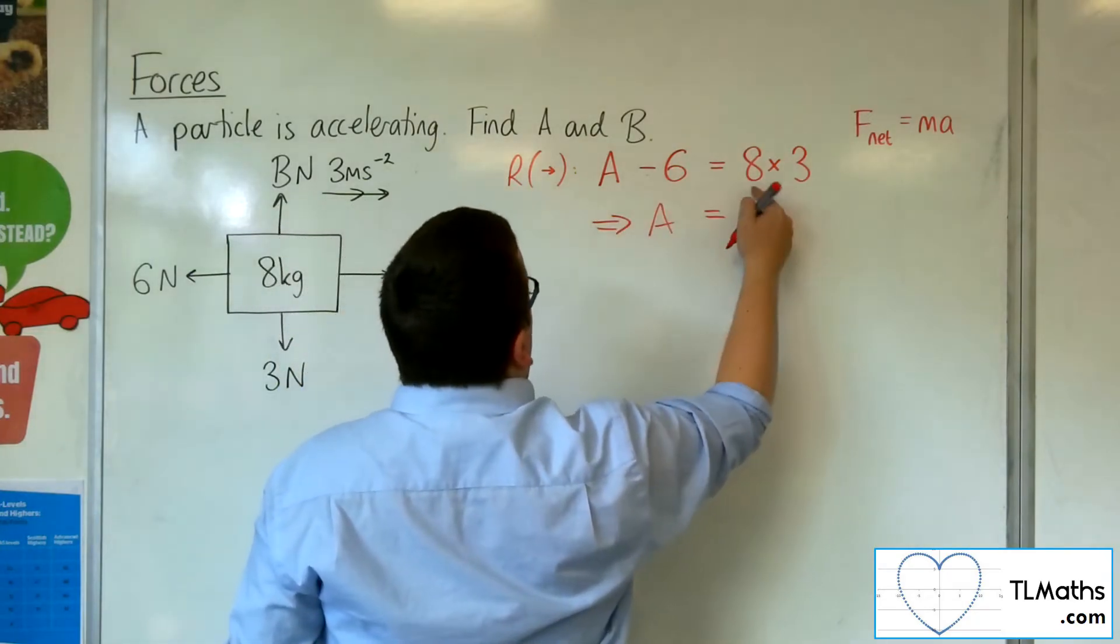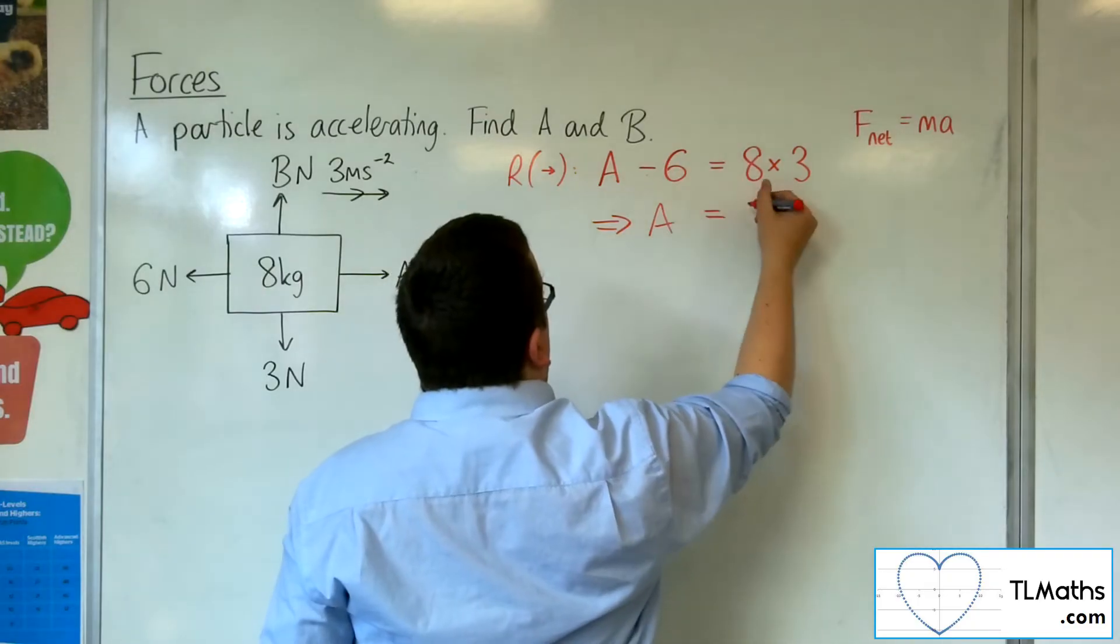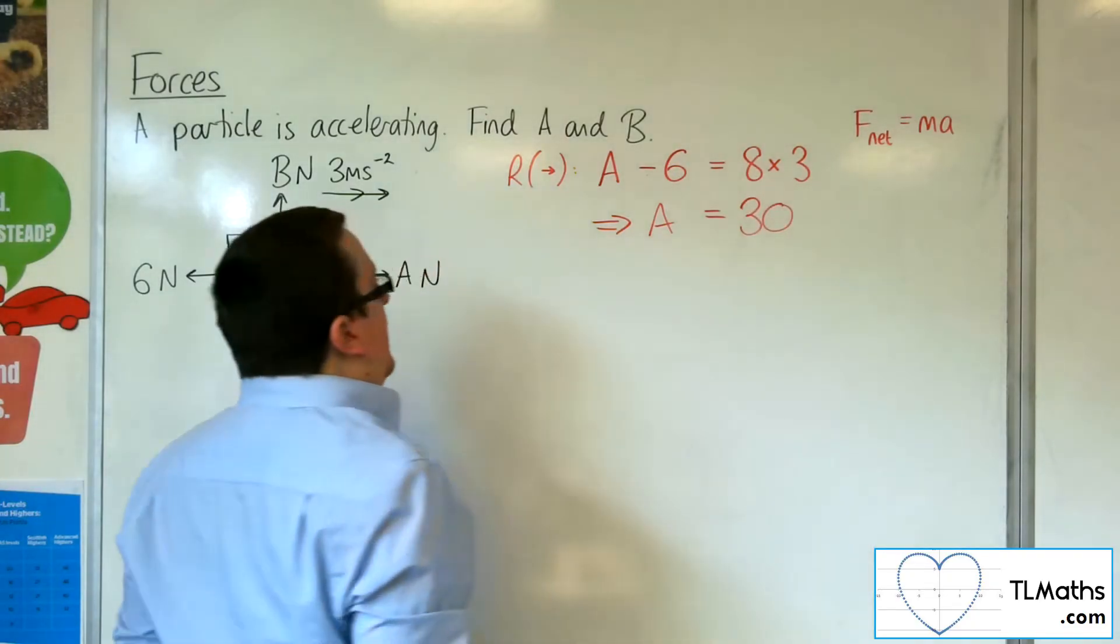8 times 3 is 24. Add the 6 is 30. So A is 30.